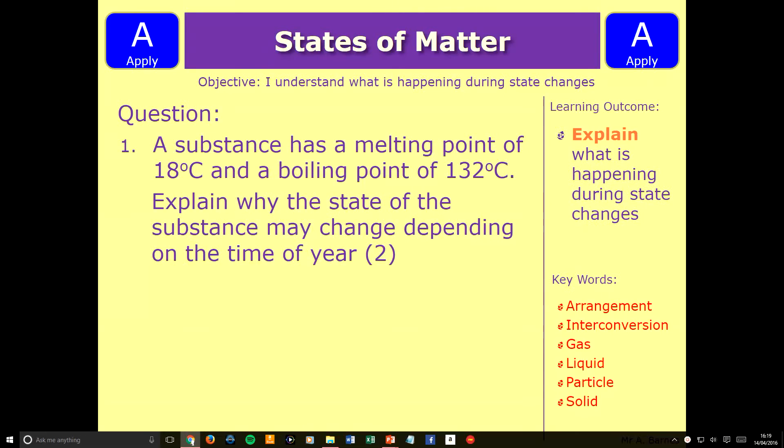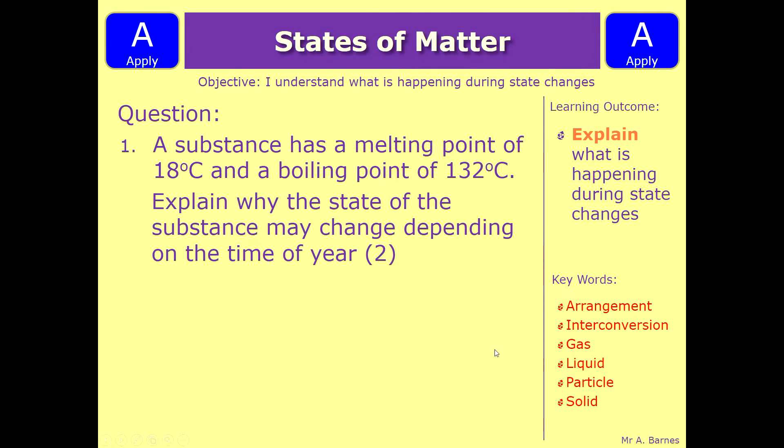Hopefully that helps. Okay, let's have a look at an example question then. So you might get something in the exam similar to this where it says a substance has a melting point of 18 degrees C and a boiling point of 132. Explain why the state of the substance may change depending on the time of year. Pause the video now and have a go at the question. Okay, you should have had a go at the question.